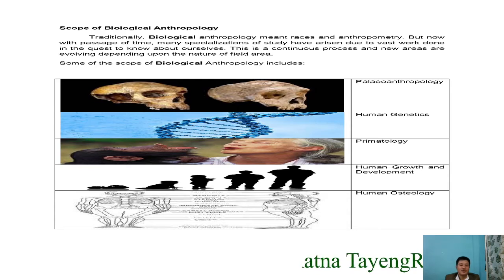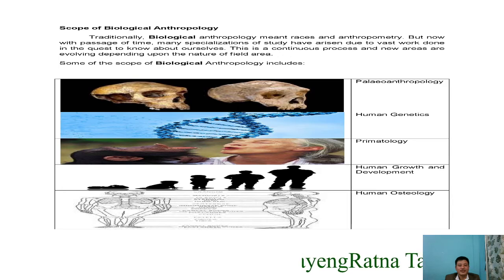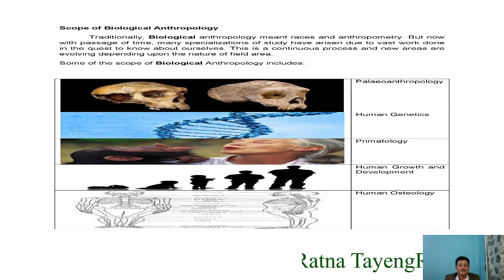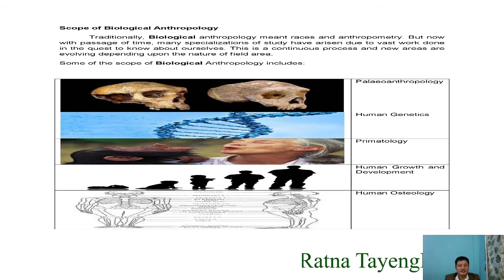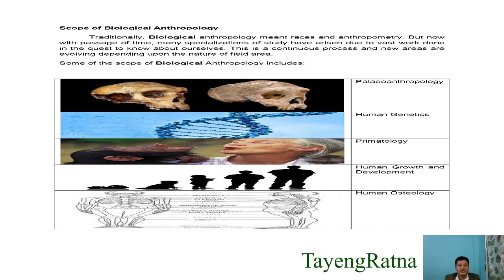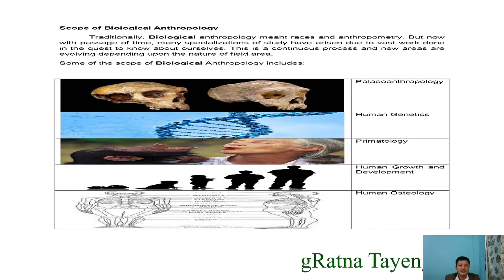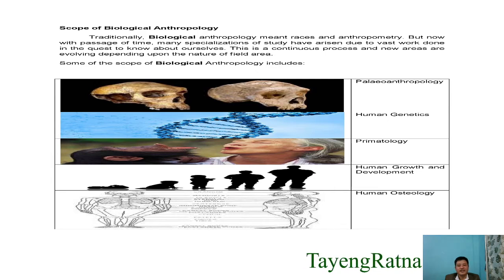Some of the popular areas and scope of biological anthropology include paleoanthropology, which is the study of fossil remains of human ancestors and associated cultural remains. Then we have human genetics, the science of heredity. It explains the cause of human variation and provides information to understand diseases and their effective management. Then we have primatology, a branch of biological anthropology that studies hominids, including all ape-like ancestors of man and all the living great apes.